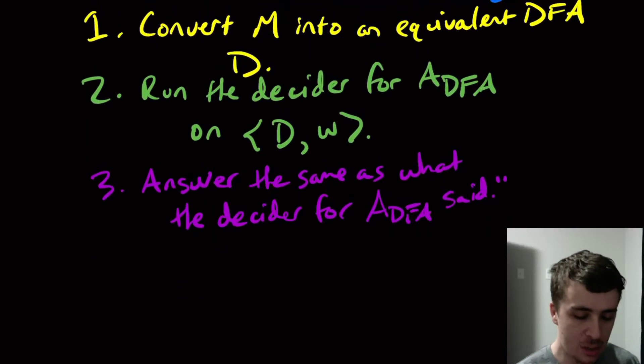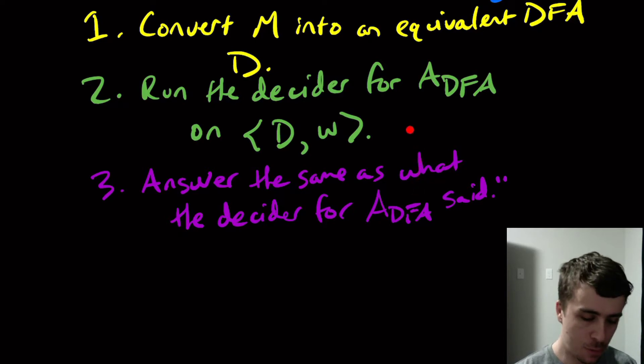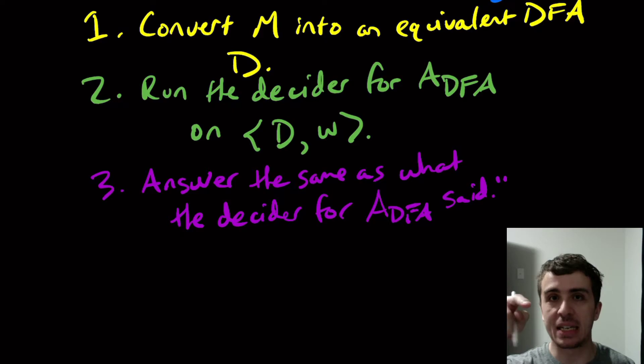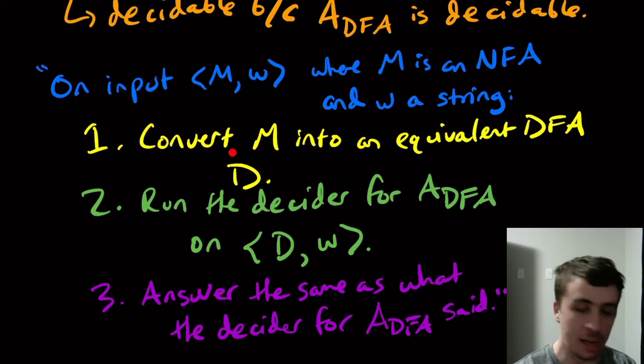And the way to actually implement that is we could rewire the accept state of the decider for A_DFA, whatever its accept state is and whatever its reject state is, we can funnel those to our own accept and reject states, the one for the machine that we're building for this.